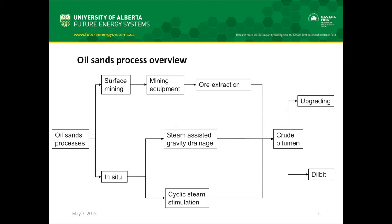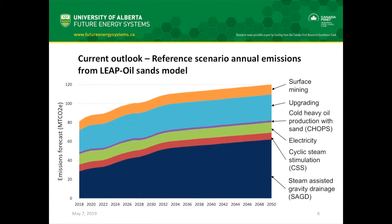This is an overview of oil sands processes. First is surface mining, where ores are dug from the surface using traditional mining methods. Second is in situ, where steam is pumped underground to mobilize the bitumen and then it's produced. We get crude bitumen which is either upgraded or diluted to be shipped to refineries. Our model shows the current outlook for greenhouse gas emissions from 2018 to 2050, broken out by subsector. The key takeaway is that the SAGD wedge is our largest source of emissions and also our largest area of expected growth.